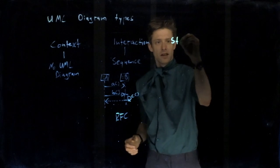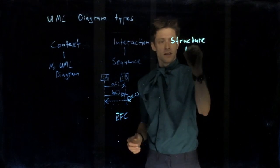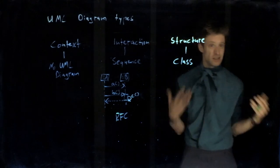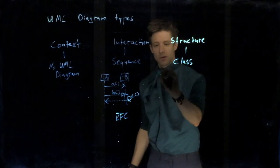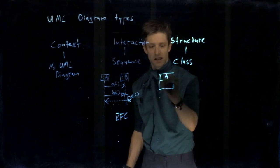Then we have structure. We might want to describe how a system looks like, how it's decomposed. The prime example here is the UML class diagram, which you're probably most familiar with.